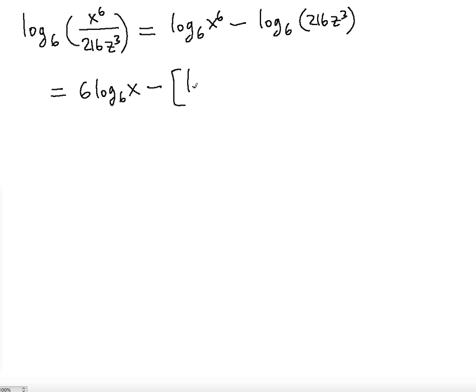So we're going to have log 6 of the first input, 216, plus - because we're talking about a sum when the inputs are multiplied - plus the log base 6 of the z to the third input.